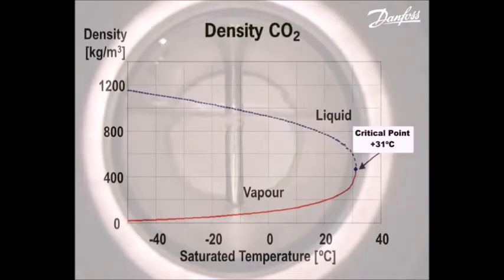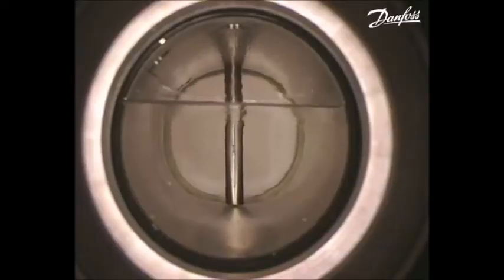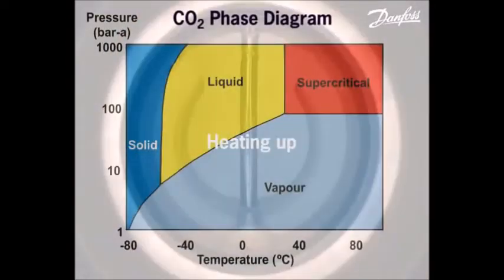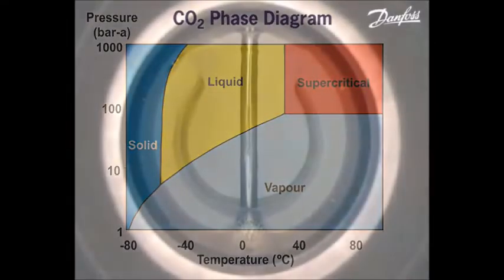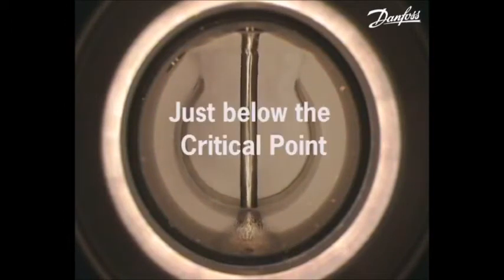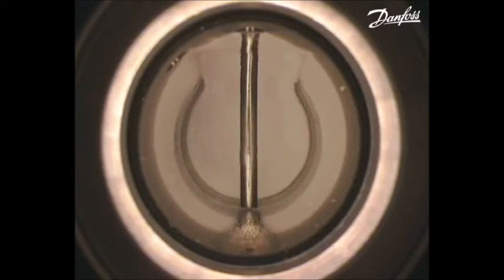The distinction between the liquid and vapor phases disappears as the temperature of the liquid CO2 increases with a consequent increase in pressure as the liquid CO2 boils. The CO2 vapor density above the liquid increases as the temperature and pressure increase, and the distinction between the two phases disappears.